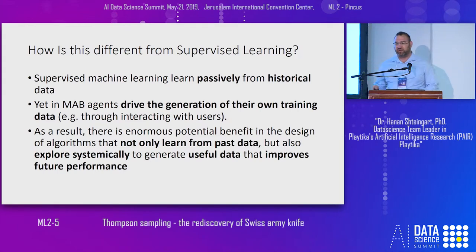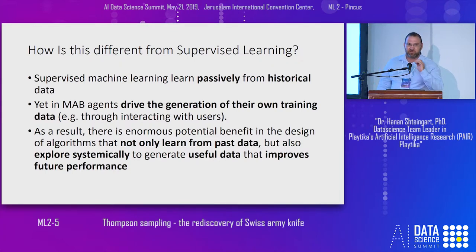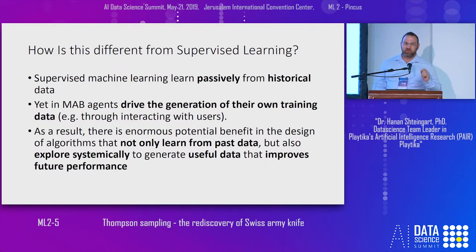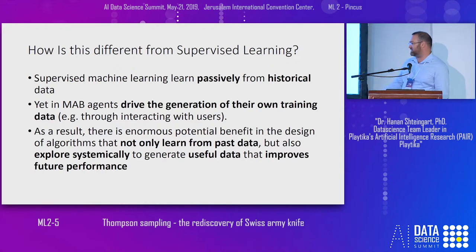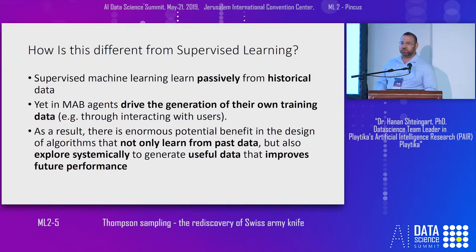How is this different from supervised learning? Supervised learning — you get labels and you train your deep neural networks. Unsupervised learning is interesting but you can't measure how well you're doing. In reinforcement learning, which I feel is the true artificial intelligence problem, you both don't have supervised labels and you can measure how well you're doing. In RL, you are driving what you are training on — your decision creates the next datasets and labels. There is a feedback loop.